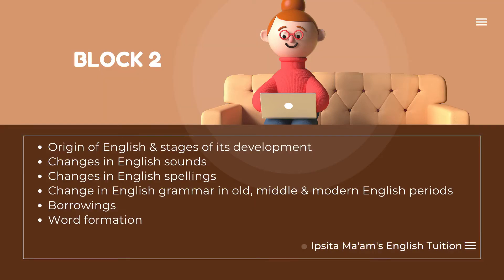Block 2: Origin of English and stages of its development. Changes in English sounds. Changes in English spellings. Change in English grammar in old, middle and modern English period. Borrowings. Word formation.